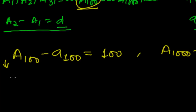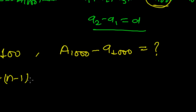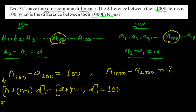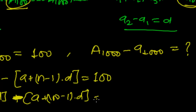Let me proceed using the nth term formula. The hundredth term of the first AP is A plus (100 minus 1) times D, and the hundredth term of the second AP is A' plus (100 minus 1) times D. Their difference equals 100. So: [A + 99D] minus [A' + 99D] equals 100.